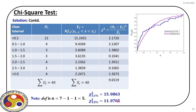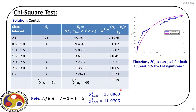From the chi-square table, the critical values are: for 1%, the value is 15.0863; for 5%, it is 11.0705. Our chi-square value estimated from the observation is 9.6519, which is less than both critical values. Therefore, our null hypothesis is accepted for both levels of significance.